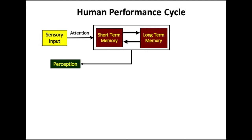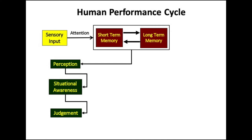Based on processing of this information, a person develops a cognitive perception by correlating this information with past learning of similar nature. This perception helps him in making an assessment of the prevailing situation, and then he makes a judgment. This judgment is an opinion or perception about the nature of the stimulus.